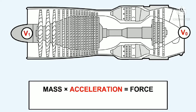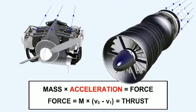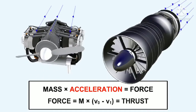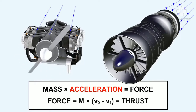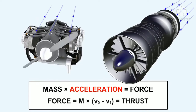The acceleration in the equation is the difference in the outlet velocity of the air, V0, to that of its inlet velocity, V1, due to the addition of heat energy. Force equals mass times V0 minus V1, which equals thrust. With the piston engine propeller combination, the propeller drives a relatively large mass of air backwards fairly slowly, while the gas turbine throws a small mass of air backwards relatively quickly.